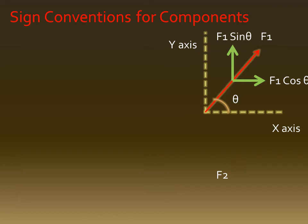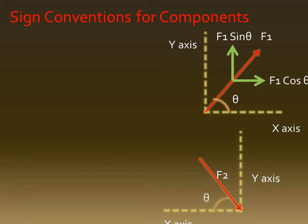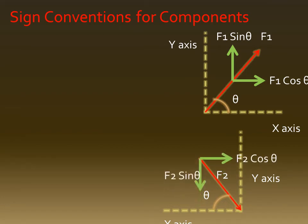Another example: force F2 acts in the downward direction, making an angle theta with the horizontal x-axis. We resolve F2 into two components — the horizontal component F2 cos θ and the vertical component F2 sin θ.